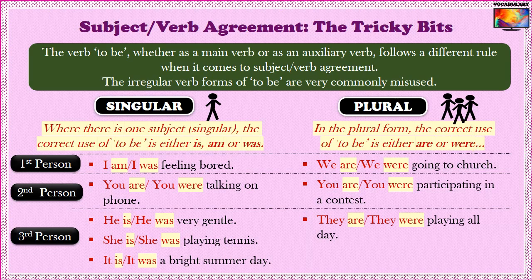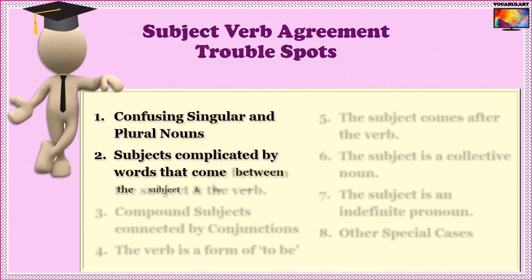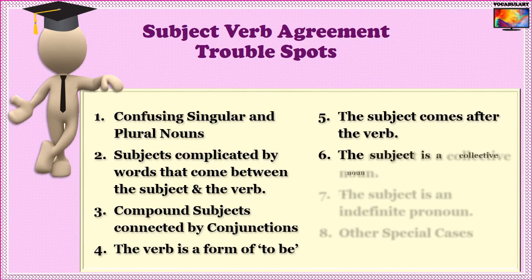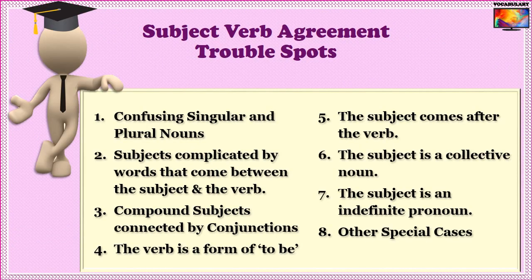Anybody who has studied English as a formal language in school is comfortable with these verb forms, so let's skip the examples and move on to the more meaty portion — the tricky areas in subject verb agreement error. We can categorize these into the following areas, which we will cover in the same order as shown here.